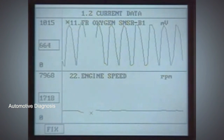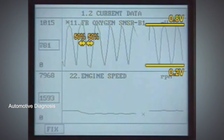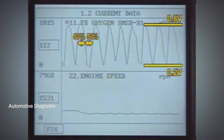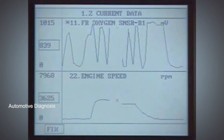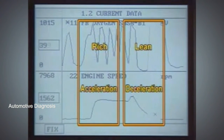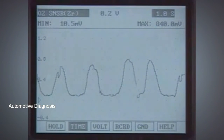As for the current data measurement, check whether the lean and rich ratio of output values is about the 50% range. Also check the maximum and minimum voltage — it should oscillate between 0 volts and 1 volt. Check if the engine becomes rich condition at sudden acceleration, and if it becomes lean condition at sudden deceleration. Check the lean and rich ratio, and maximum and minimum values at idle state or constant speed.